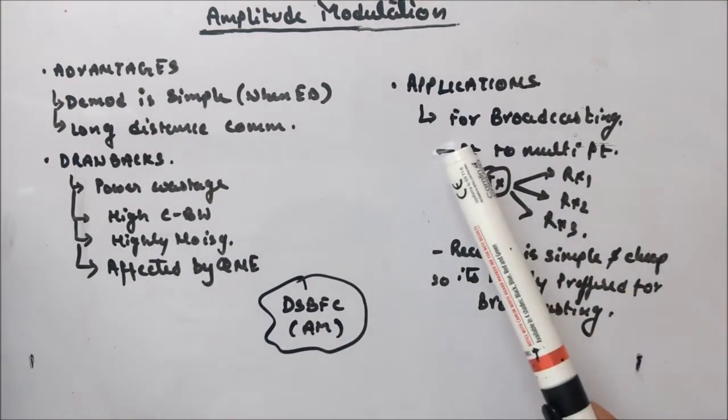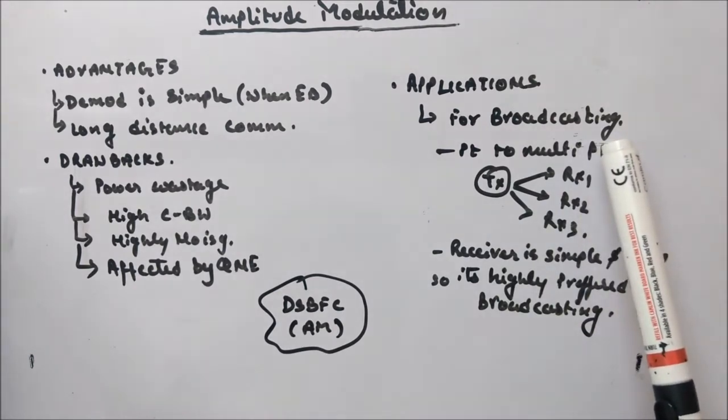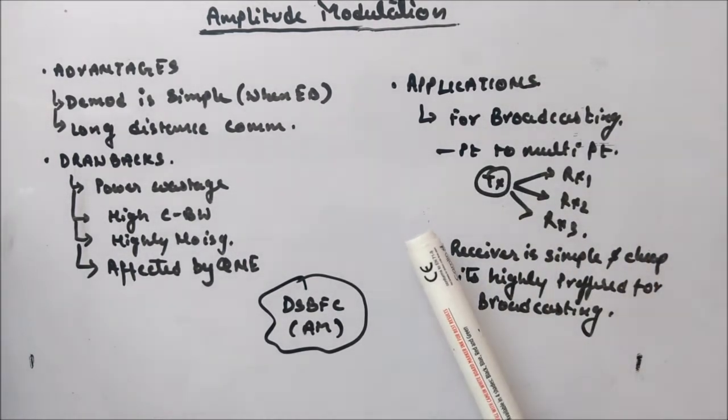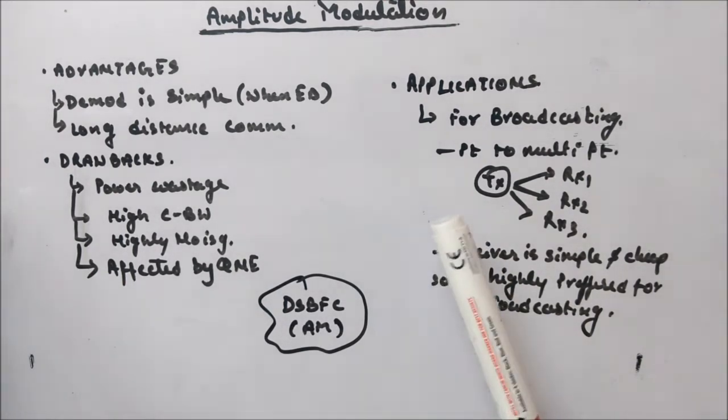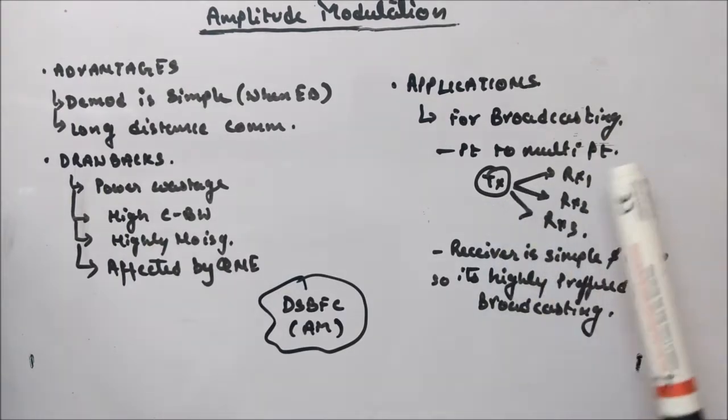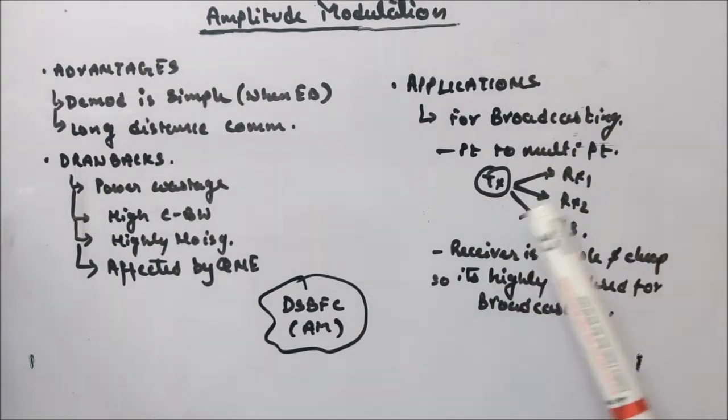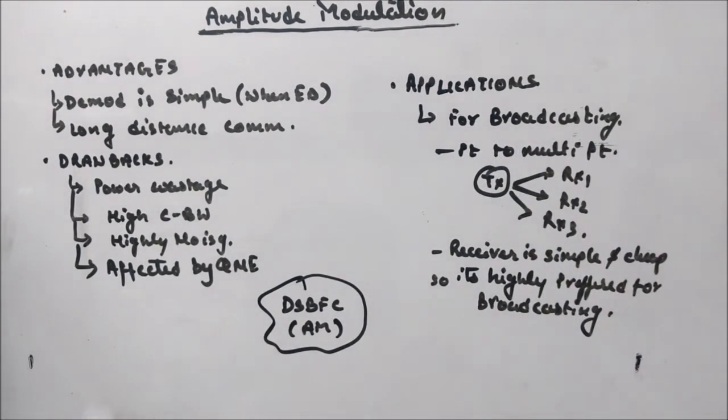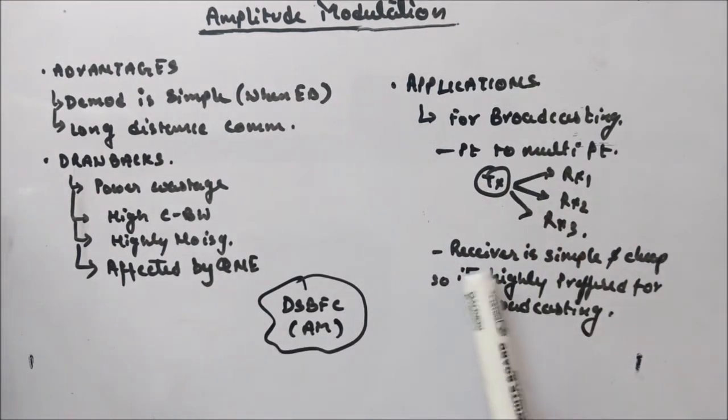The application part, it can be used for broadcasting purpose. So point to multipoint types like your radio and all. Not radio, but broadcasting means when you will have one transmitter and multiple receivers, then you can use for broadcasting purpose, point to multipoint.